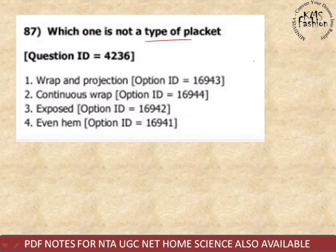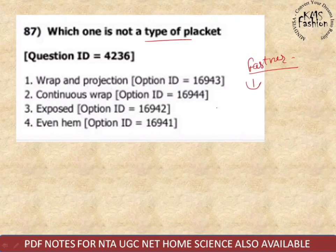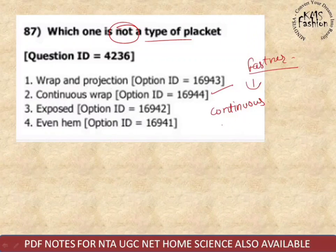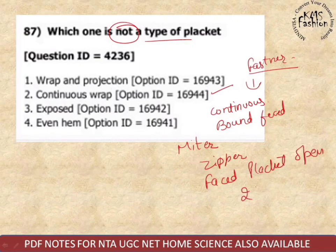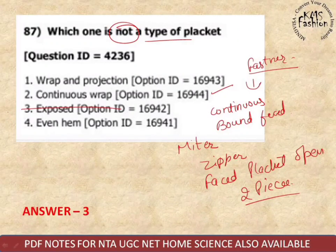Next question: which one is not a type of placket? A placket works as a fastener. Types of plackets include: continuous, bound, faced, zipper, open, and two-piece placket. Exposed is not a type of placket, so that is the correct answer.